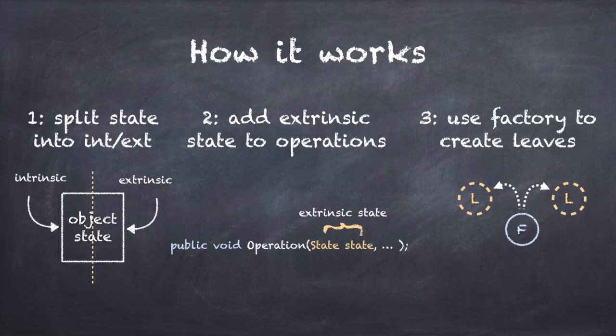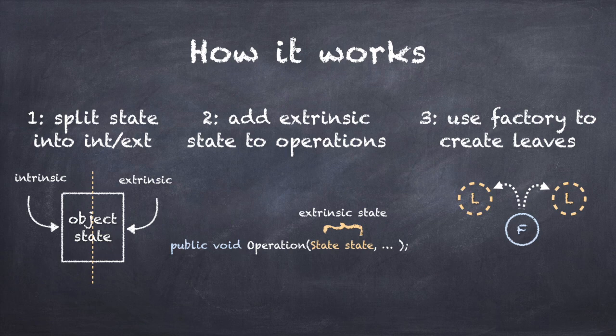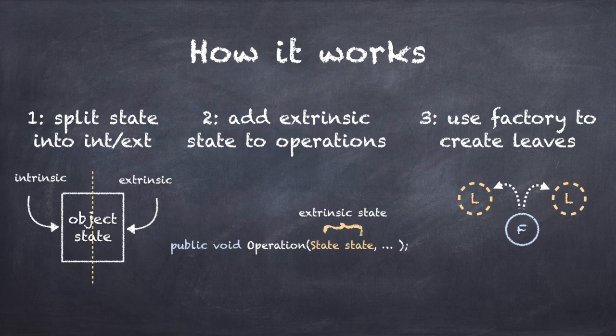The first thing you have to do is examine the internal state of the leaf object and split it into an intrinsic state, which can be shared with others, and an extrinsic state, which cannot be shared. In my tree example, each leaf has a unique name, so I only have extrinsic state, which cannot be shared. The next step is to re-engineer the client code to always supply the extrinsic state. So every time my code accesses a leaf object, it must first look up the name in the database and then provide this name to any method call in the leaf object.